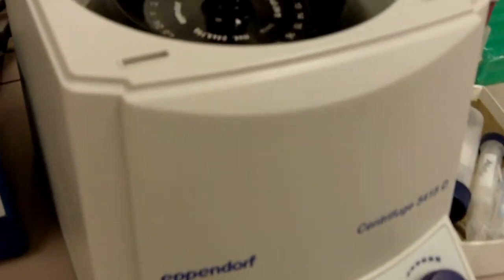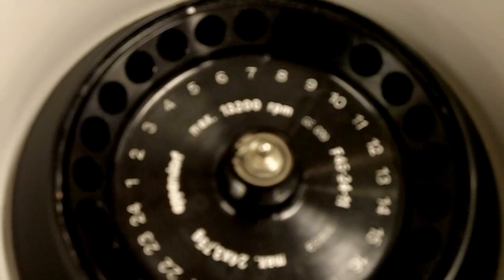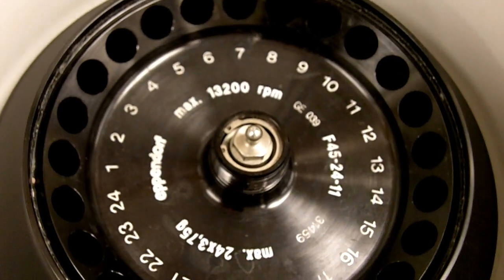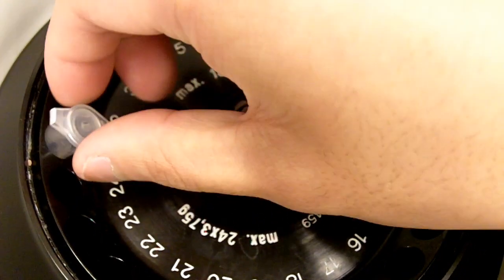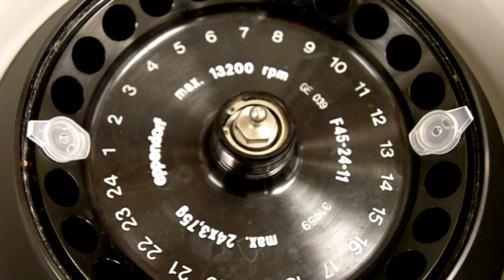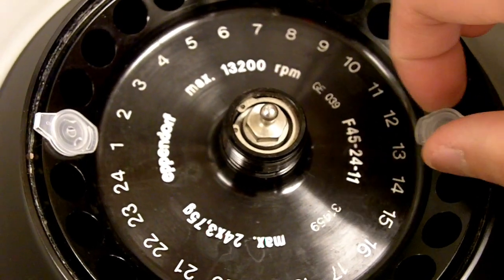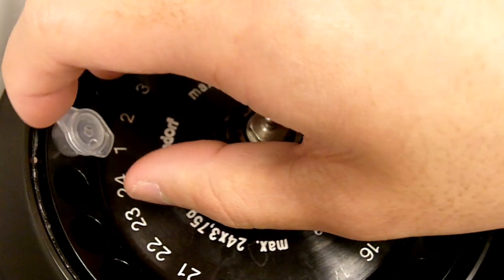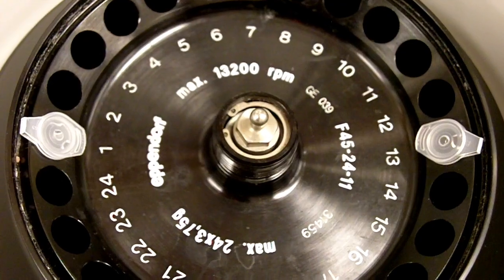Now I'm going to show you how to balance your samples in a centrifuge. We are looking at a centrifuge rotor right now. You have to place your sample directly across from each other. That's how you balance it. If you only have one sample, you can take a second tube, just fill it up with the same volume of water. Then you will have your centrifuge balanced.